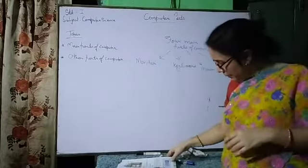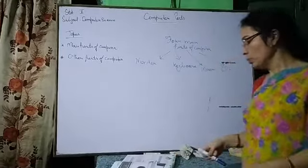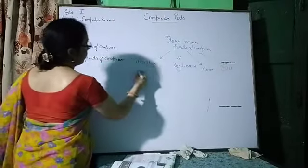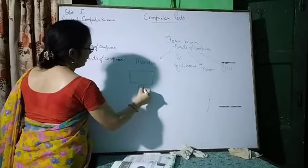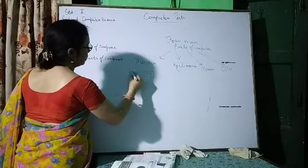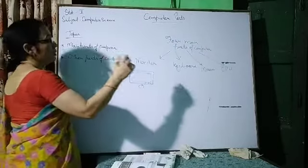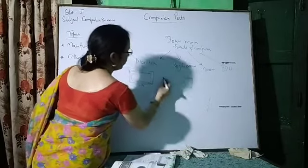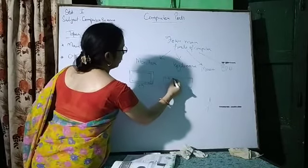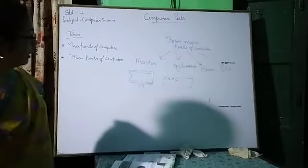Now children, turn the page. Next is keyboard. Monitor we already understood — it looks like an LCD TV. Now, keyboard. Have you seen a keyboard? In the computer lab, we have many keyboards. In the keyboard, there are many keys.